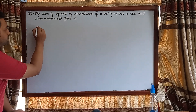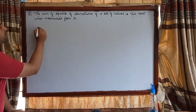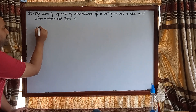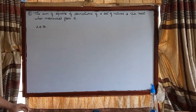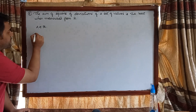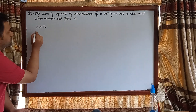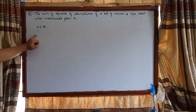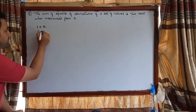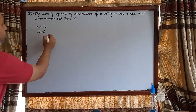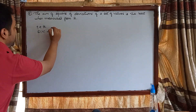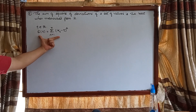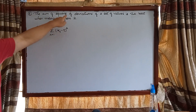The sum of squared deviations means: if t is some real number, we define S as a function of t given by the summation from i equals 1 to n of (x_i minus t) squared. This function, which depends on t, is called the sum of squared deviations.